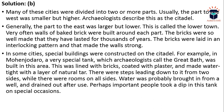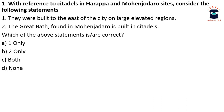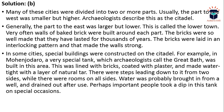The answer is B. The first statement is wrong because the elevated region, that is the citadel, was built to the west of the city and not to the east. The Great Bath was built in the citadel, so the second statement is correct. The answer is B — second only.